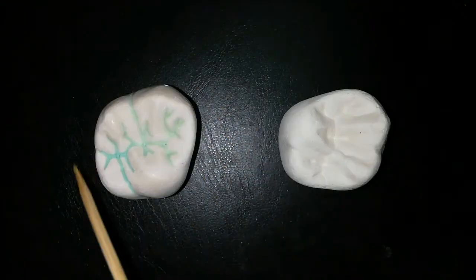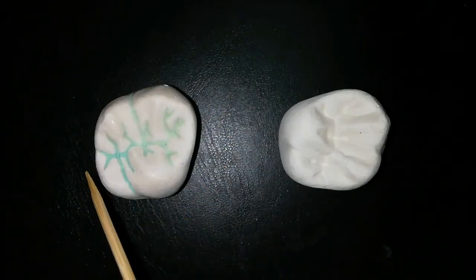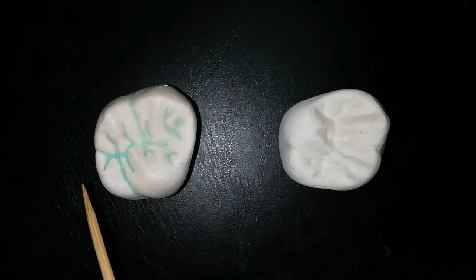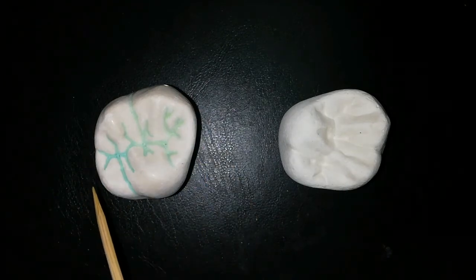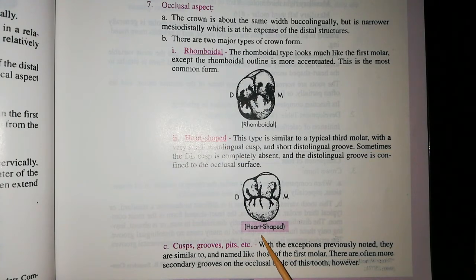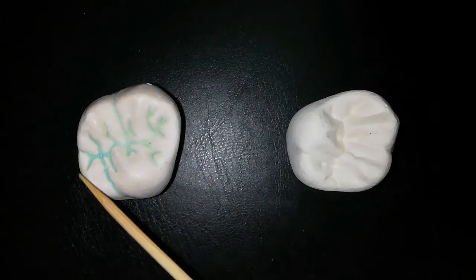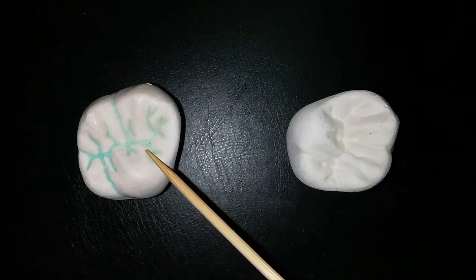The occlusal aspect is similar to the maxillary first molar except that it is narrower mesiodistally. There are two major crown forms. The first is the rhomboidal form, which looks like the maxillary first molar and is also more commonly found. The second type is the heart-shaped form, which is similar to a typical third molar. It has a very small distolingual cusp and a short distolingual groove. Sometimes the distolingual cusp is completely absent. With the exceptions previously mentioned, the cusps, grooves, and pits are similar to the maxillary first molar.